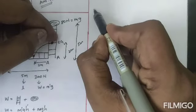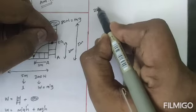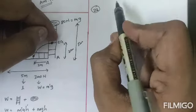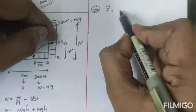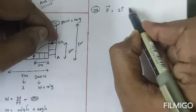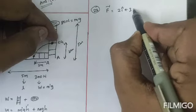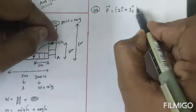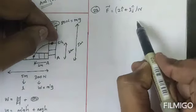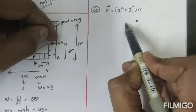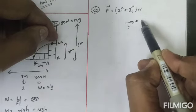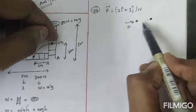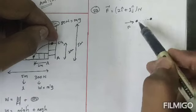This is question number 22. First I can write the given value, that is F vector is given as 2i cap plus 3j cap Newton. For example, here one particle is there. Now we can apply the force on this particle so it is displaced from here to here, making a line.